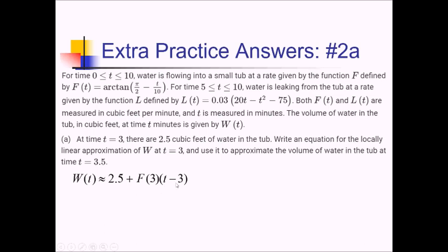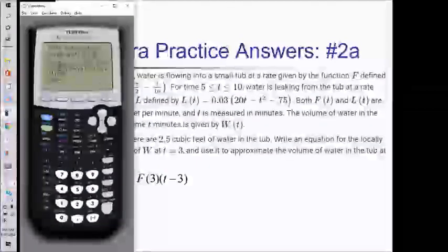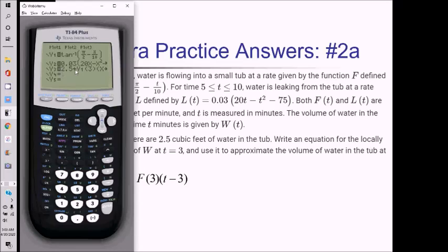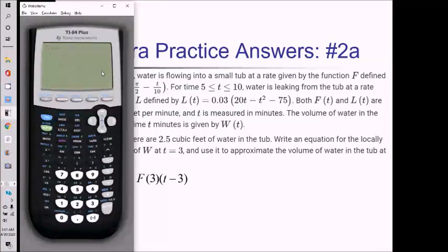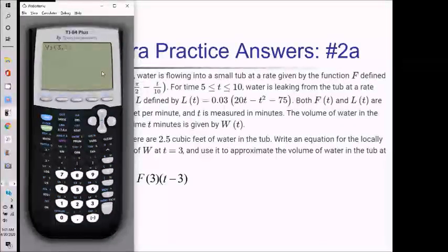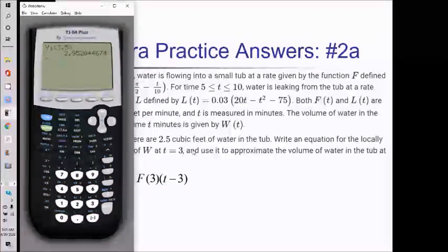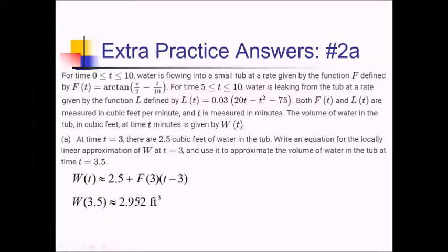I put the approximation in Y3: 2.5 plus Y1 evaluated at 3, times X minus 3. Then I pull up Y3 and plug in 3.5. Pressing enter comes out to about 2.952. So W of 3.5 is approximately 2.952 cubic feet of water.